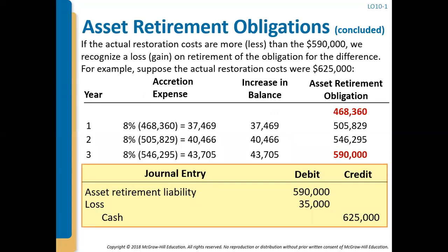If the actual restoration costs differ from the estimated $590,000, we recognize either a loss or a gain. For example, if it actually costs $625,000, we debit the ARO liability for $590,000, credit cash for $625,000, and recognize a $35,000 loss. If it cost less than $590,000, we would recognize a gain instead.